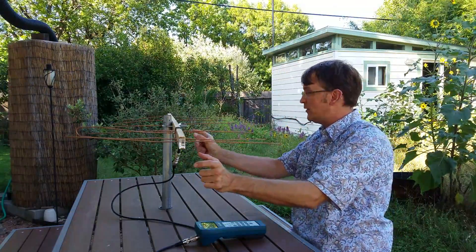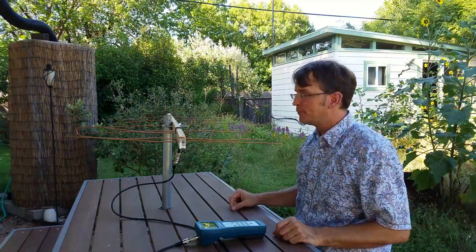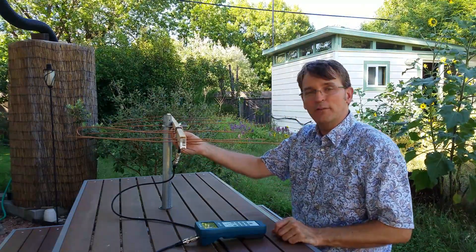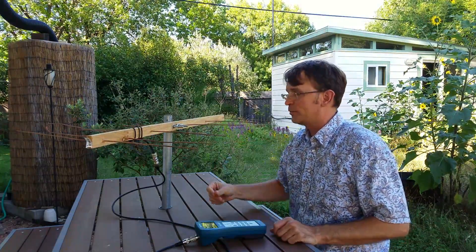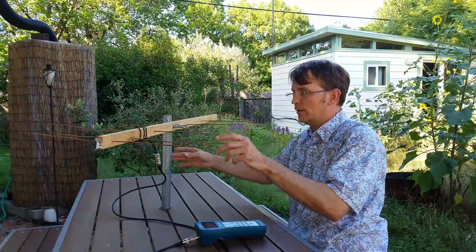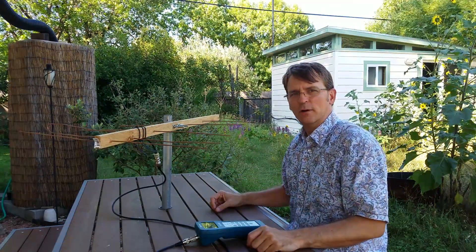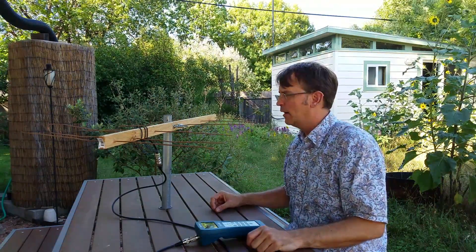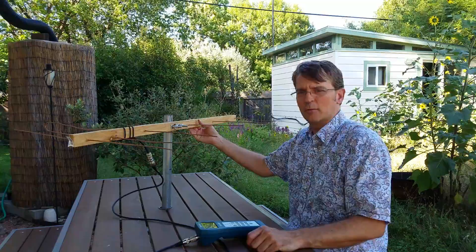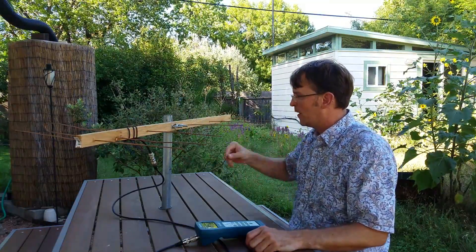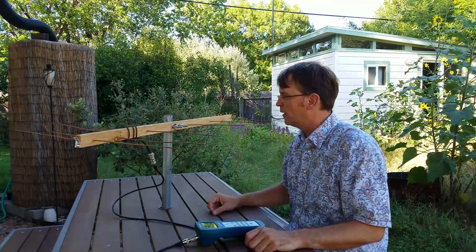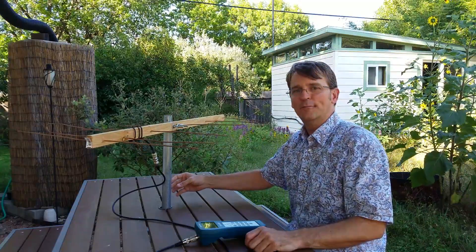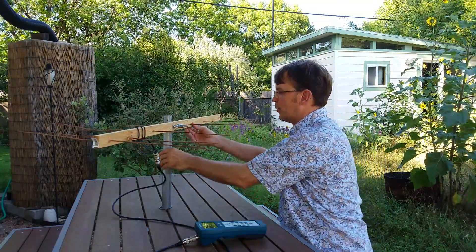I used a one by two furring strip, which is quite possibly the cheapest wood you can find. This is just number six copper grounding wire, six gauge. You can get all this at a hardware store for just a few bucks. I used a U-clamp with some wing nuts and put this on a pole.